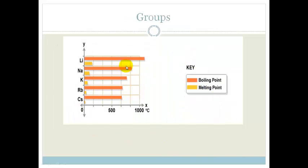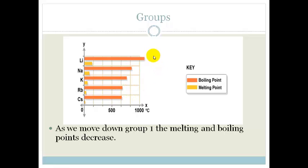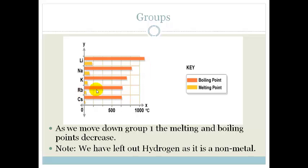Right, now let's look within the groups. Now remember groups are the rows down. So if we look at group 1, we've got lithium, sodium, potassium, rubidium, and cesium. And you can see that what? The boiling points are decreasing. So the boiling points and also the melting points are decreasing.